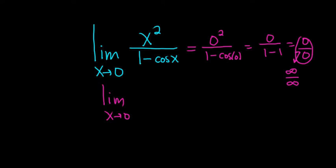So the derivative of the top piece is 2x. And on the bottom, the derivative of 1 is 0, the derivative of cosine is negative sine, but there's already a negative here, so it's just going to become a positive sine.